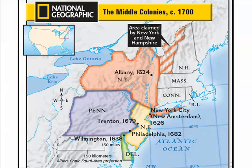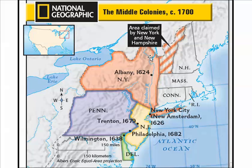Let's look at a map of the middle colonies, or mid-Atlantic. We call them the mid-Atlantic because here's the Atlantic Ocean — the middle of the Atlantic seaboard of the original 13 colonies, all the way down to Georgia. New York State, New York City, Pennsylvania, New Jersey, and Delaware are all part of the middle colonies or mid-Atlantic colonies.